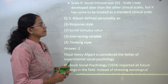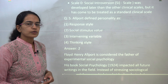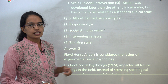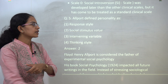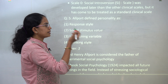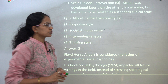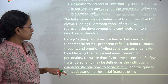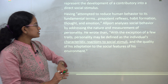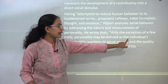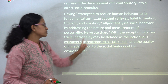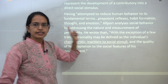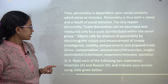Allport defined personality — we are talking about F.H. Allport here, a pioneer in social psychology. He explained personality as a result of social stimulus value. In his words, personality is defined as an individual's characteristic reaction to social stimuli. Therefore, 'social stimuli' would be the correct answer.